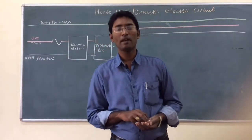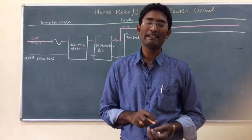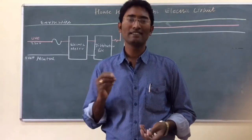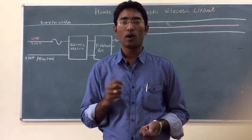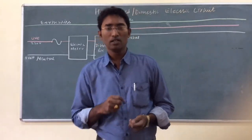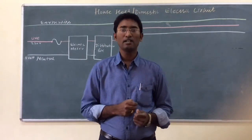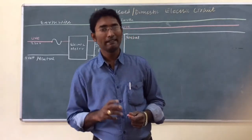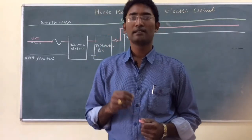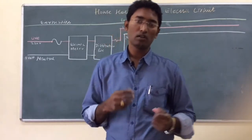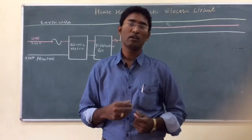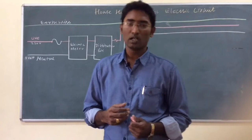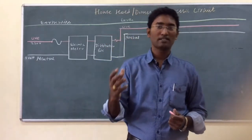Today we will see domestic electric circuit or household electric circuit. Electricity is produced at the power station and brought to cities using overhead wire cables or underground wires. The electricity we get at home has a potential difference of 220 volts and is supplied by the MSEB or other power companies, which can be public sector or private sector.